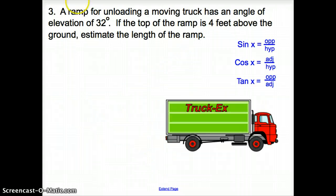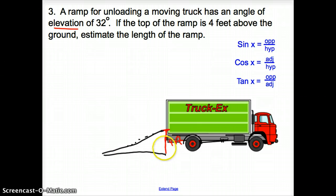With three, we are going to apply either the angle of elevation or the angle of depression. So let's take a peek. A ramp for unloading a moving truck has an angle of elevation of 32 degrees. If the top of the ramp is four feet above the ground, estimate the length of the ramp. Well, let's start with a little picture here. I'm going to say my ramp is going to go right about there. And we are told that it is four feet above the ground. Now my ramp goes from here all the way down to the ground to make a nice little right triangle.